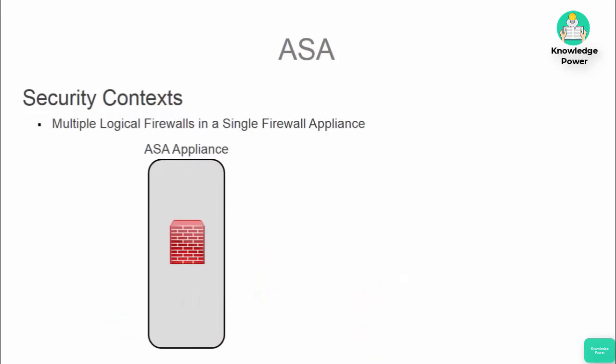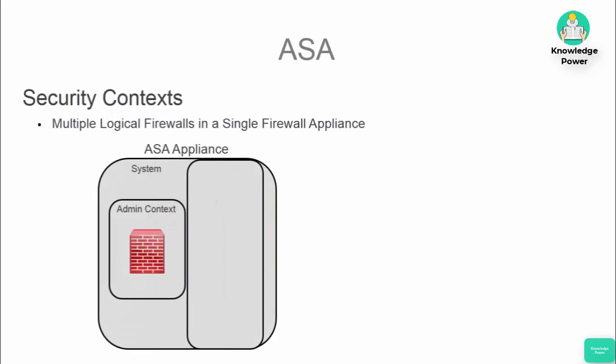To enable multi-context mode on an ASA, you enter the command 'mode multiple'. Then, after the ASA is restarted, it will operationally be in multi-context mode.